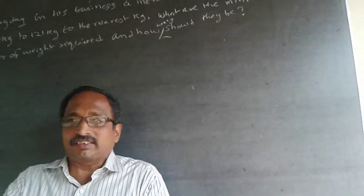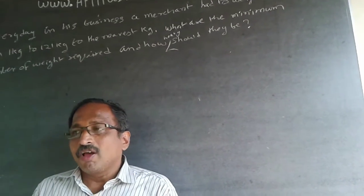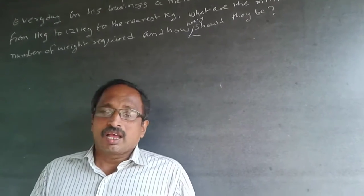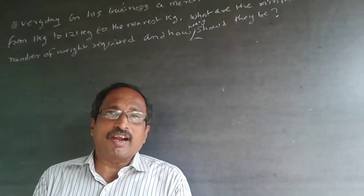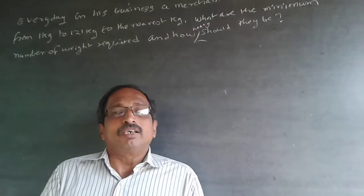He can't give 10 kg, 10 kg, 10 kg like that. In a single weighing, he'll have to give. What are the minimum number of weights required and what are they? This is to be understood like this.